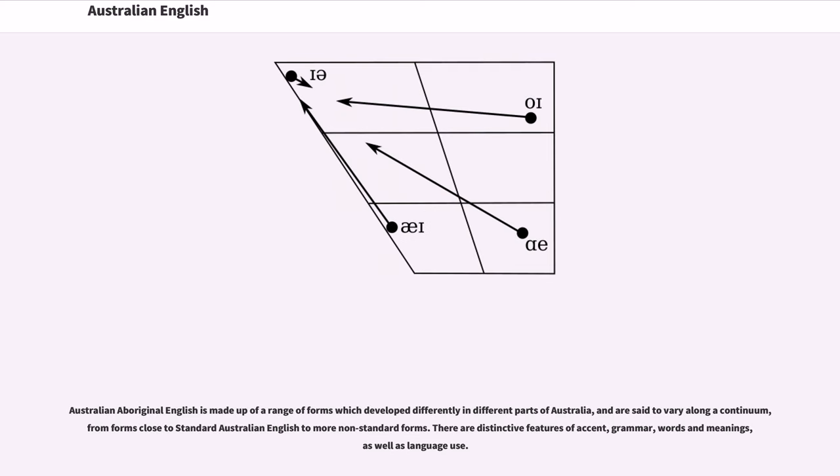Australian Aboriginal English is made up of a range of forms which developed differently in different parts of Australia, and are said to vary along a continuum, from forms close to standard Australian English to more non-standard forms. There are distinctive features of accent, grammar, words and meanings, as well as language use.